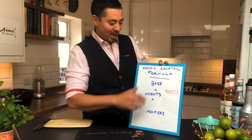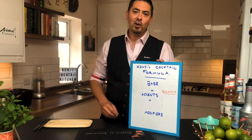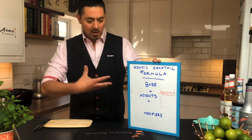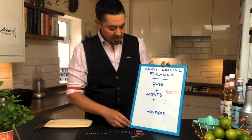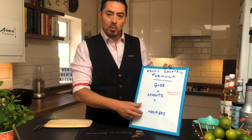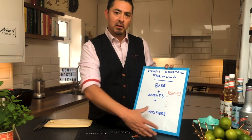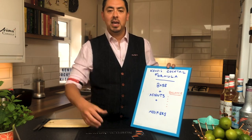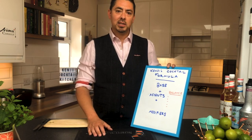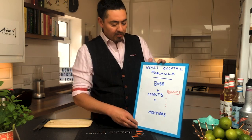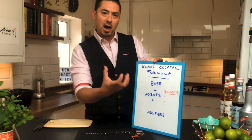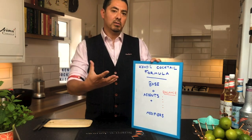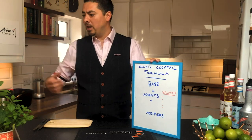My cocktail formula, which I developed over the years talking to bartenders around the world and looking at different structure, comes down to: base, accent and modifiers. There are a lot more additional elements and we're going to be looking at some of those in the bartender masterclass. But just to start it off — the base, the heart of the cocktail, is your alcohol.